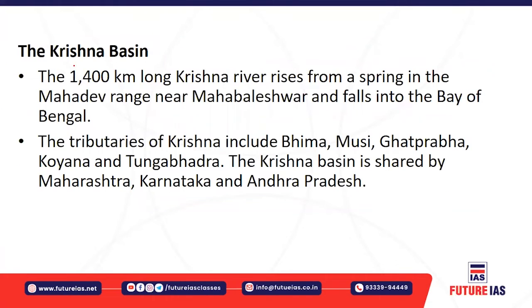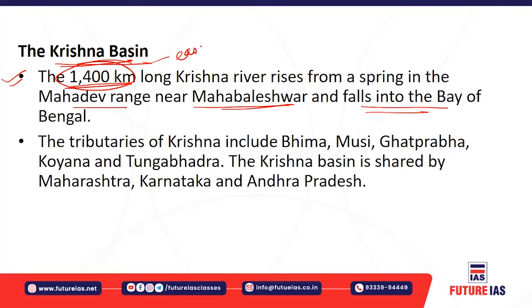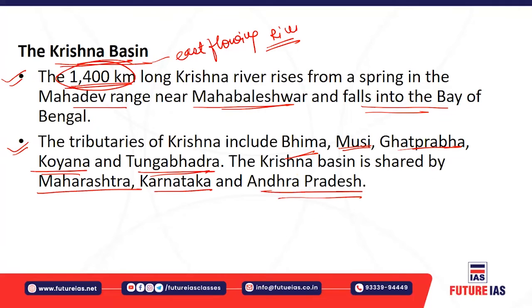Krishna is a comparatively longer river at around 1,400 kilometers. It rises from the Mahadeva Range near Mahabaleshwar in Maharashtra from a spring, and falls into the Bay of Bengal — making it an east-flowing river. Its important tributaries are Bhima, Musi, Ghataprabha, Koyana, and Tungabhadra. The Krishna Basin is shared by Maharashtra, Karnataka, and Andhra Pradesh.